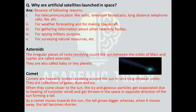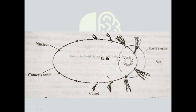Comet: comets are heavenly bodies revolving around the Sun in a very long elliptical orbit, and they are a collection of gases, dust, and ice. A comet generally has three parts: nucleus, coma, and tail. When they come closer to the Sun, the icy and gaseous particles get evaporated due to heating of the Sun and get thrown into space in the opposite direction of the Sun, forming a tail. As the comet moves towards the Sun, the tail grows bigger; when it goes away, the tail becomes shorter. The nucleus is the central part, composed of rock particles trapped inside a frozen mass. When the comet is far away from the Sun, it appears only as a nucleus.